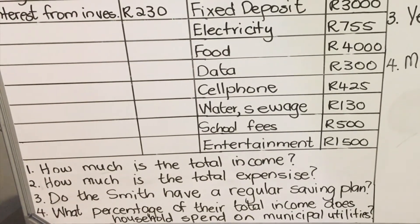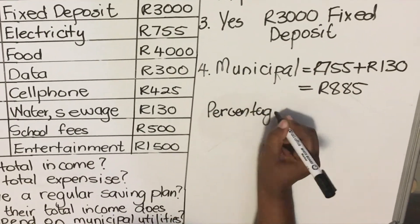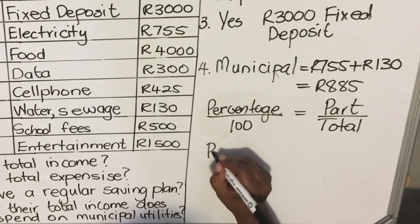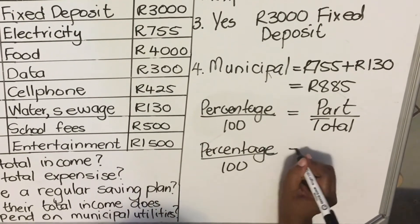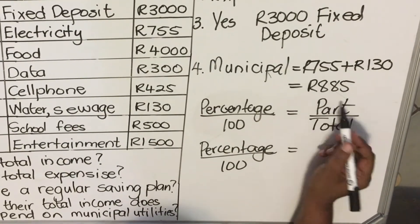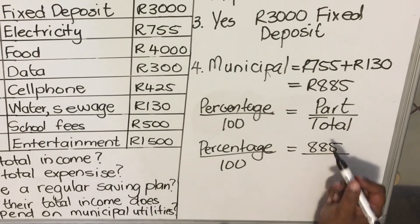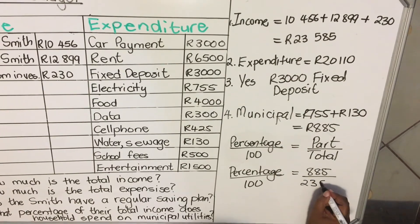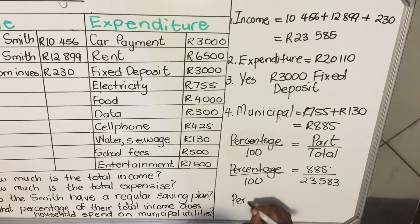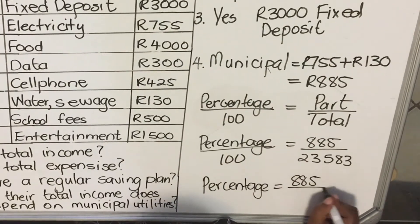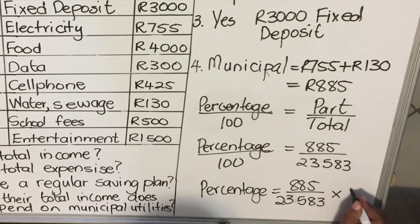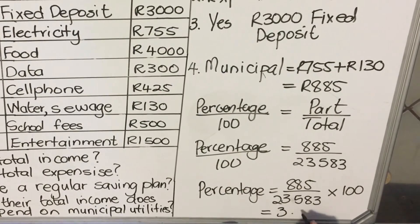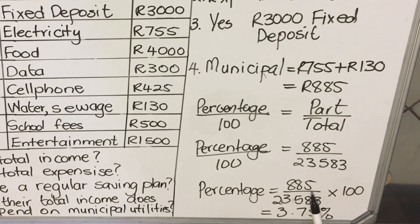The question asks what percentage of their total income that is. The formula for percentage is: percentage over 100 equals part over total. The part is 885 and the total income is 23,585. So the percentage equals 885 divided by 23,583 multiplied by 100. Entering this into a calculator gives us 3.75%. That means 885 is 3.75% of the total income.